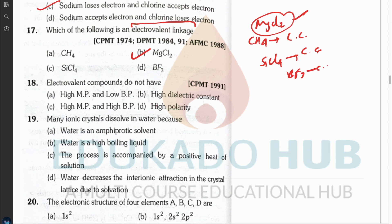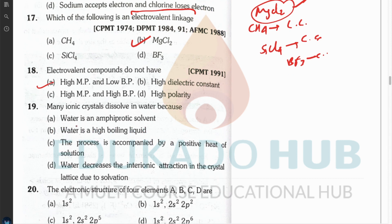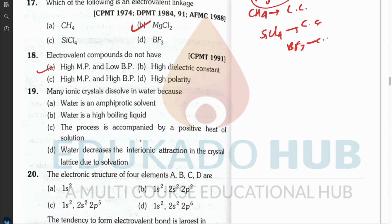Question eighteen: electrovalent compounds do not have — the options are high melting and low boiling point, high dielectric constant, high melting and high boiling point, high polarity. They do not have low boiling point because they have both high melting and high boiling points. This is because they are formed by ionic bonds, which are the strongest bonds.